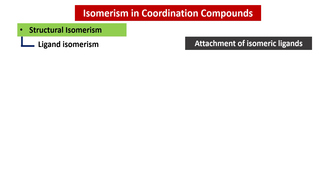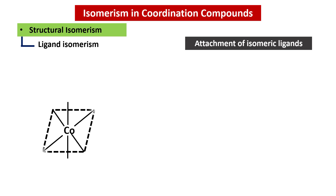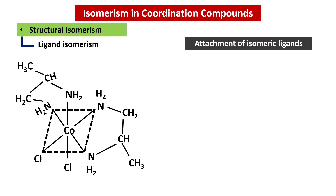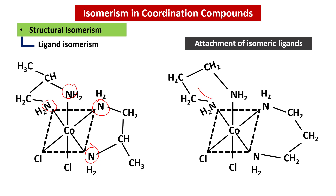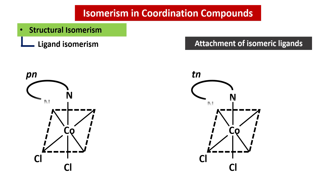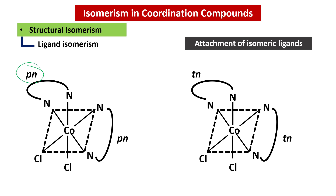In the first case, the cobalt atom is at the center with two cis chloride atoms, and 1,2-diaminopropane (Pn) is attached accordingly. In the second case, cobalt is at the center with two chloride atoms and 1,3-diaminopropane (Tn) attached. These can also be written in abbreviated form: Pn for 1,2-diaminopropane and Tn for 1,3-diaminopropane. Since these two complexes differ in the isomers of the ligand itself, it is called Ligand Isomerism.